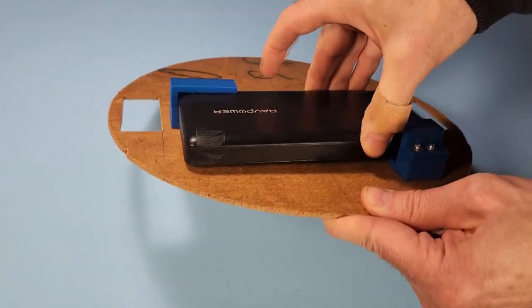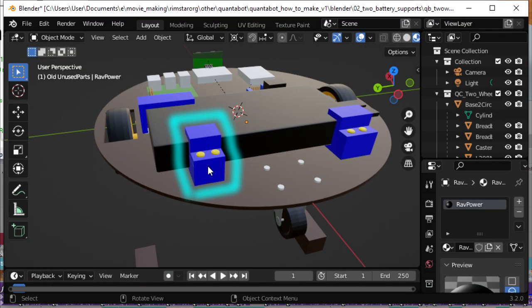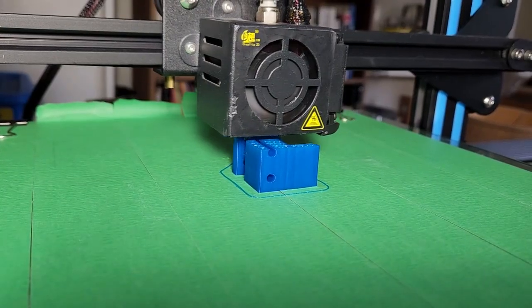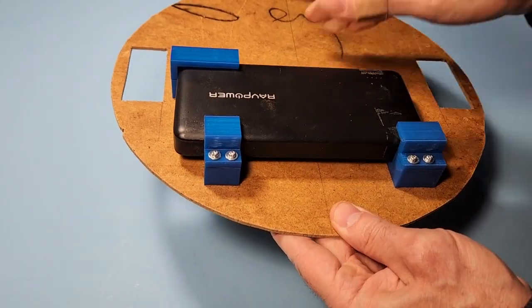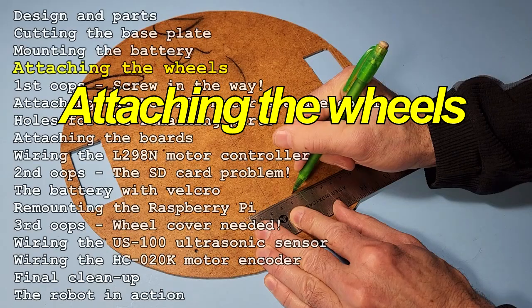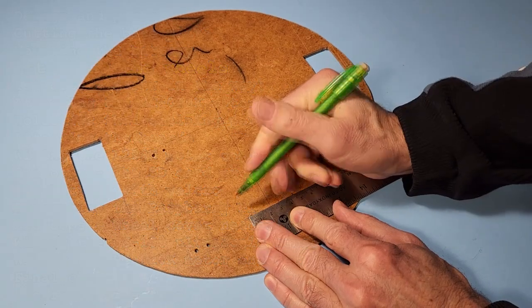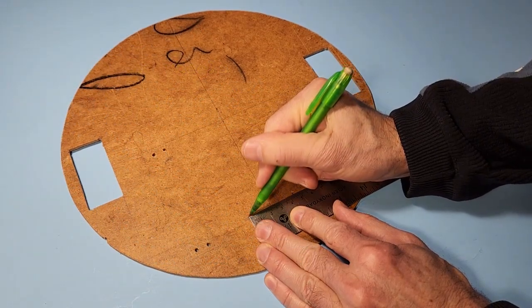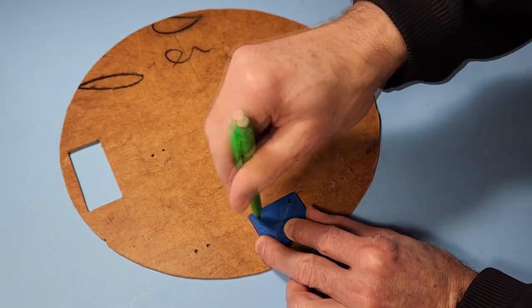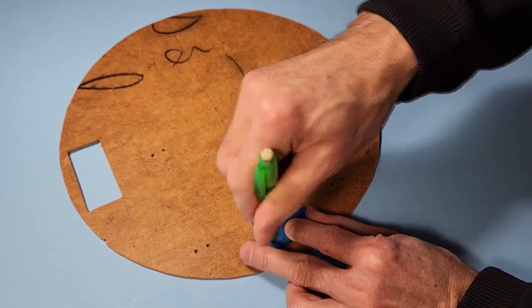So I designed this third support, 3D print it, and once bolted in place, the wobble is gone. The next step is to mark and drill the holes for the three wheels. I start with the caster wheel. I lay the spacer in the correct place and mark the holes.